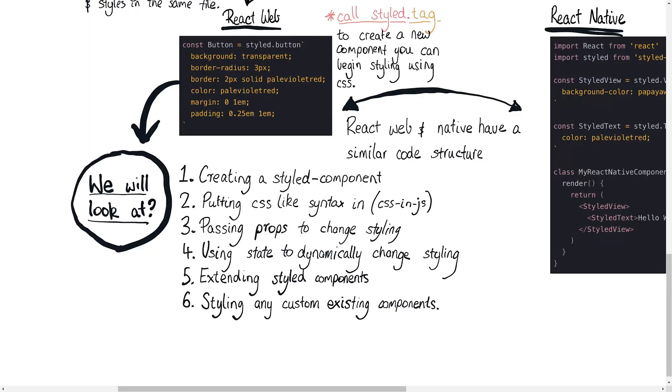We're going to install Styled Components into a React.js project. In there, we're going to add some CSS in JavaScript. We're going to parse some props to change the appearance of components. We're going to parse some state to change the dynamic appearance of other components. We're also going to extend some Styled Components and also style some custom components. So if you're ready, let's just jump right into it.